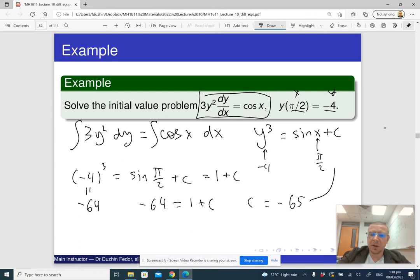So basically, now I can plug it in back to the equation, and doing that, I will get Y cubed equals sine X minus 65. And now, solving for Y, I get Y is cube root of sine X minus 65.